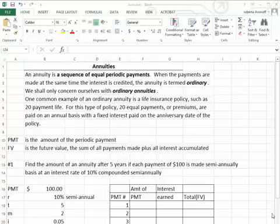Annuities. What is an annuity? An annuity is a sequence of equal periodic payments. In other words, we're putting money into an account every so often. It could be yearly, monthly.